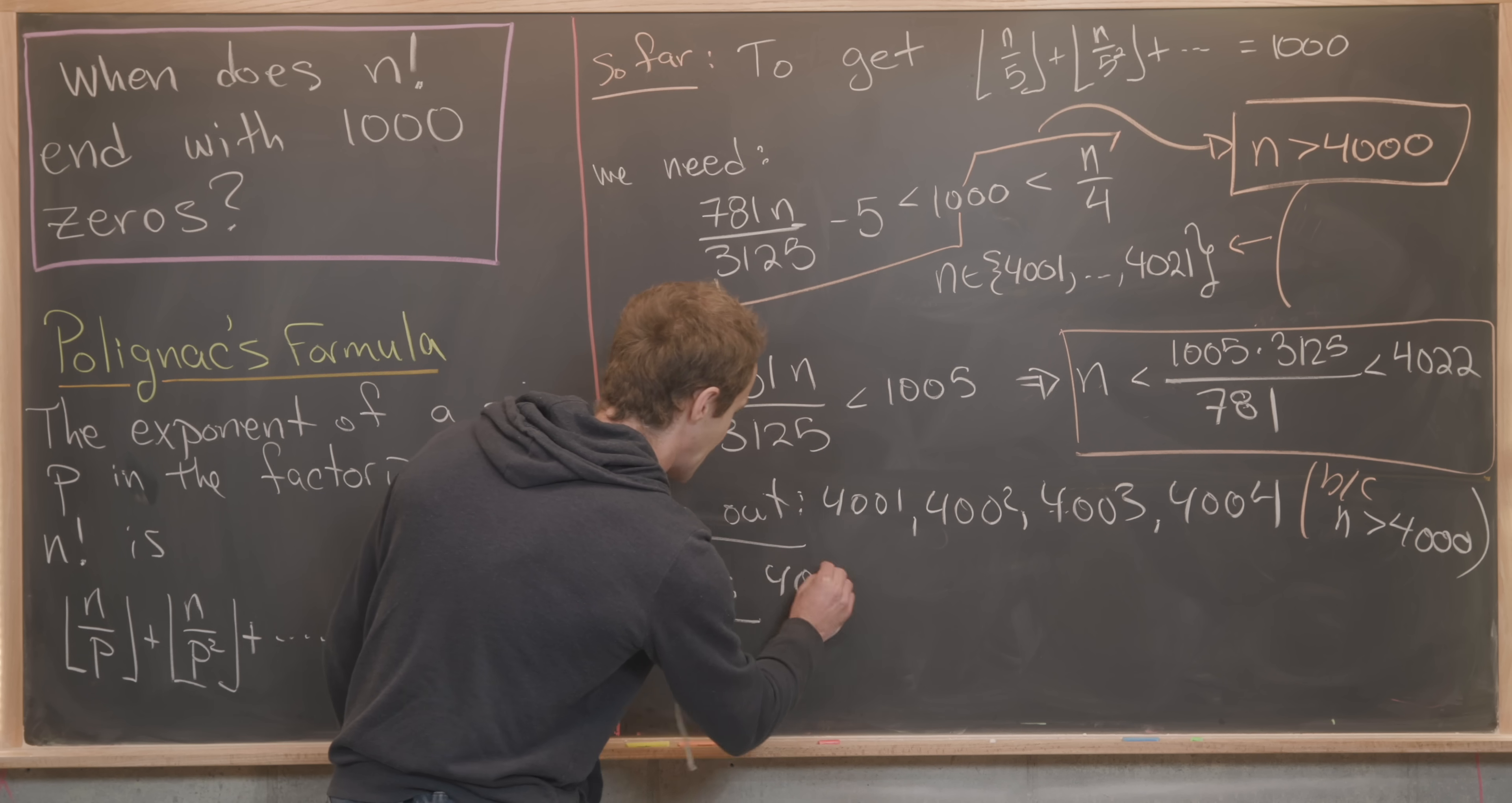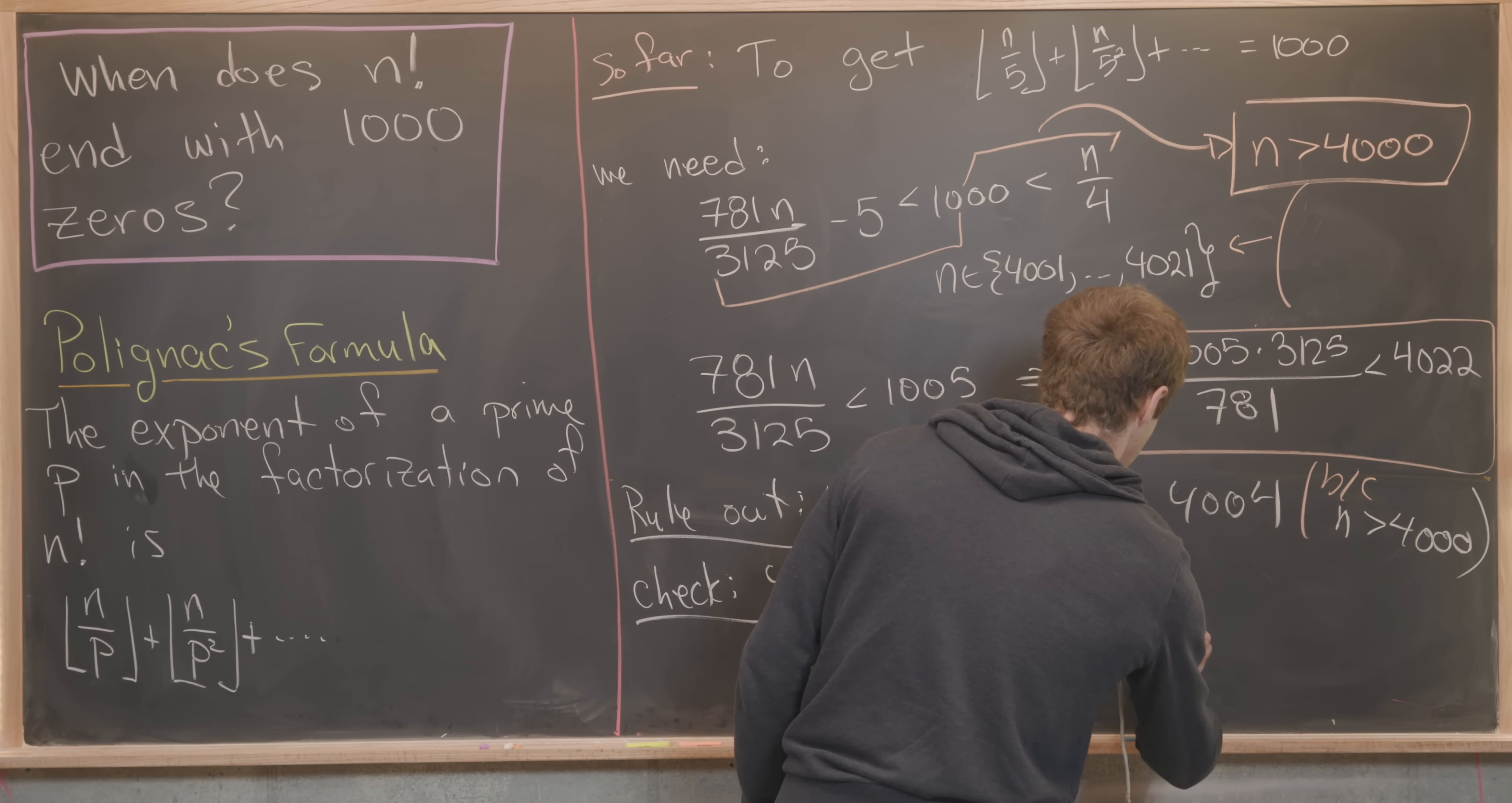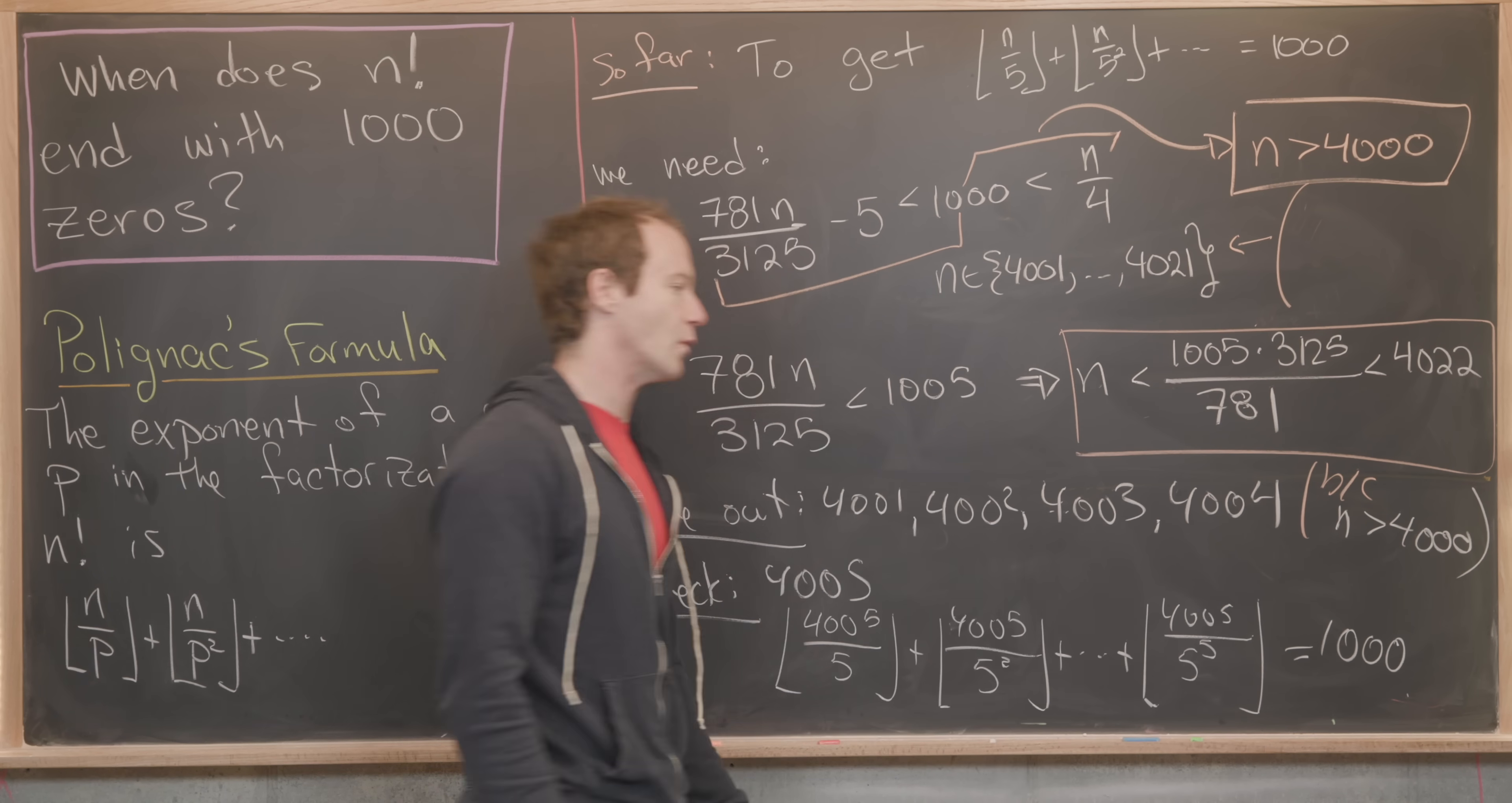Now we'll just check 4005 and we'll see what we get. If we plug 4005 into this, we'll see that we have 4005 over 5 in the floor, plus 4005 over 5 squared in the floor, all the way up to 4005 over 5 to the 5th in the floor. That's because 5 to the 6th is going to be bigger than 4005. I'll let you guys check this calculation in detail, but what you'll see is that this works. We get 1000 out of that.